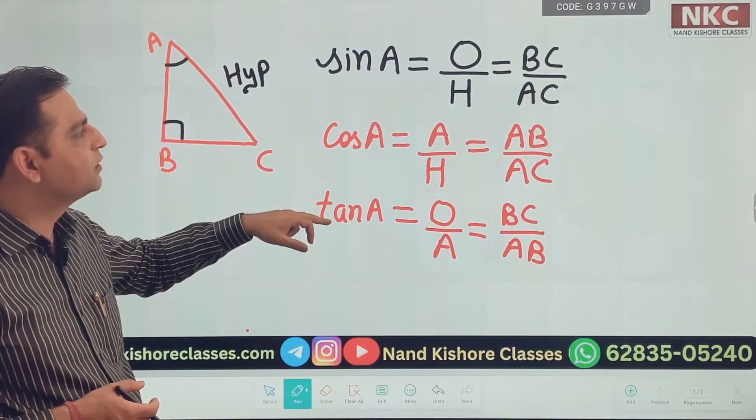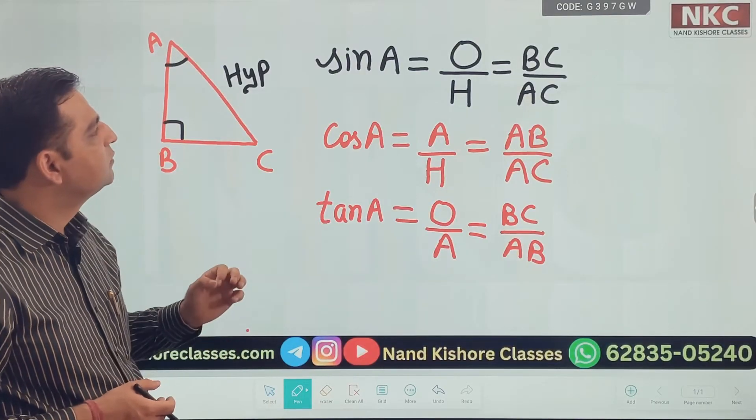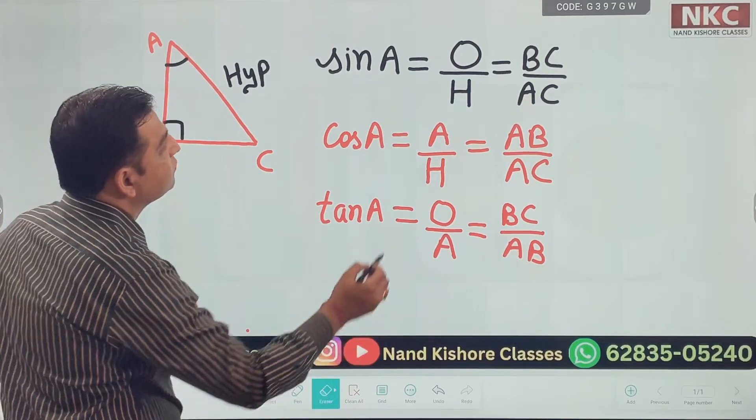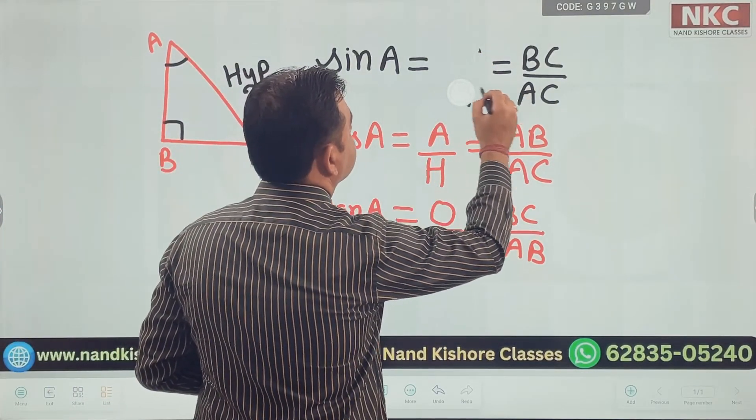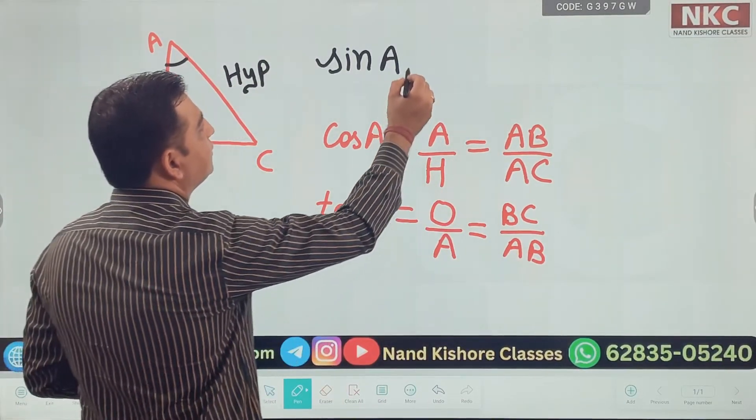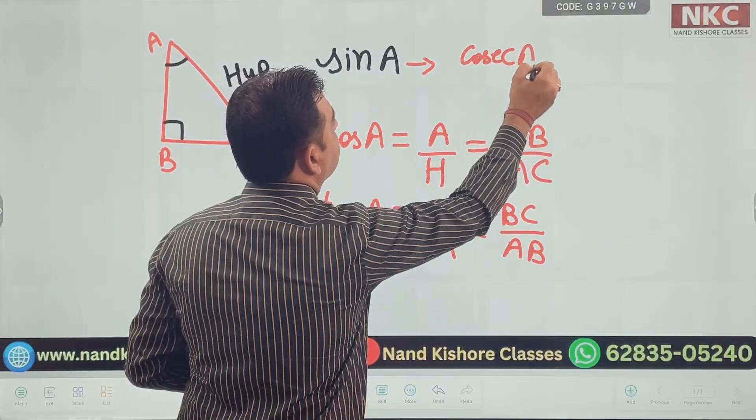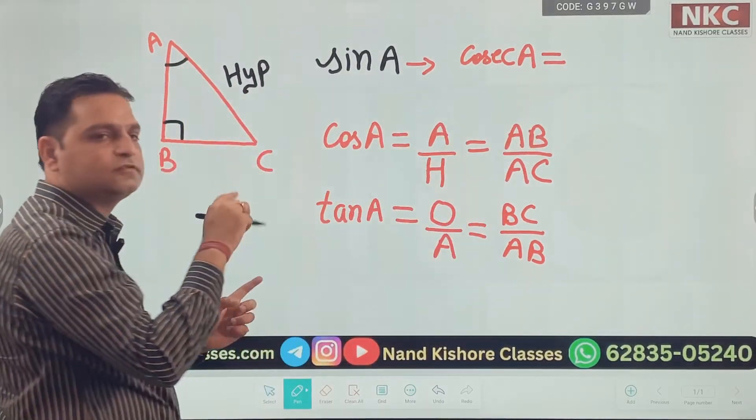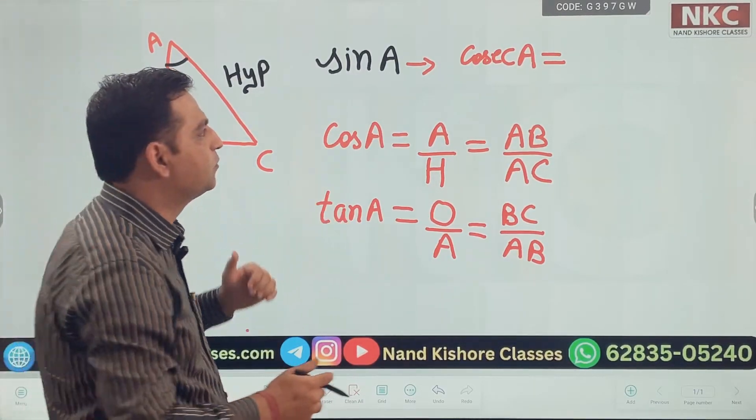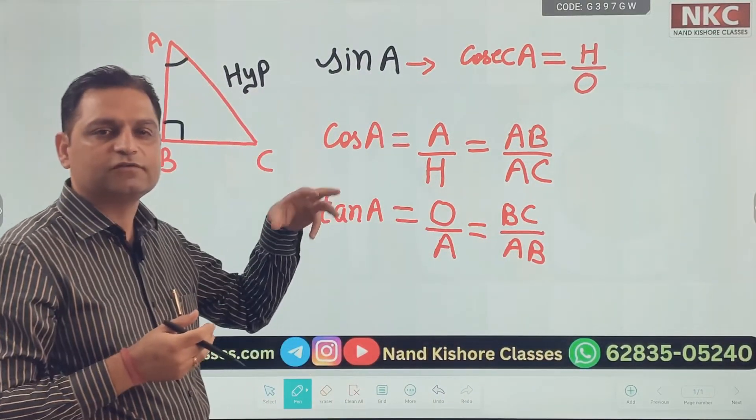Once we are done with sin, cos and tangent. I am just using the words, which is the reciprocal of sin. I am going to write here. You will get to know very easily. Reciprocal of sin is, I am writing here, cosecant. Do remember, sin and cosecant are reciprocal of each other. Sine was opposite over hypotenuse. So, it is hypotenuse over opposite. Just reciprocal.